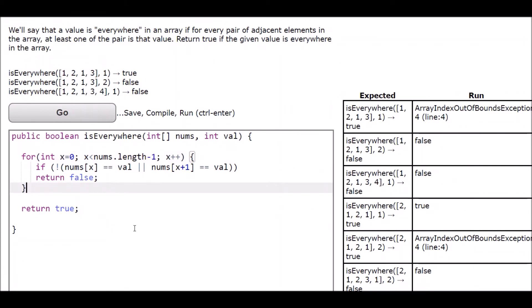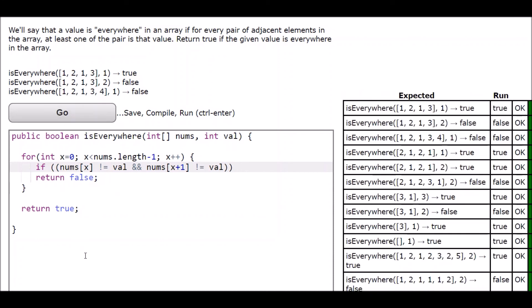Now, if you want to write an equivalent Boolean expression to this, you remember dMorgans, I could have just said if the value at position x is not equal to value and the value at position x plus one is not equal to the value, then return false. That's equivalent. And I can run it and you can see, yeah, that works just as well.